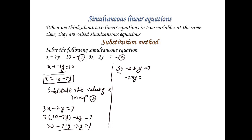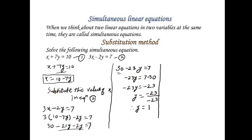So we have 30 minus 21y minus 2y is equal to 7, which gives 30 minus 23y is equal to 7. Then minus 23y is equal to 7 minus 30, which is minus 23. So y is equal to minus 23 divided by minus 23.